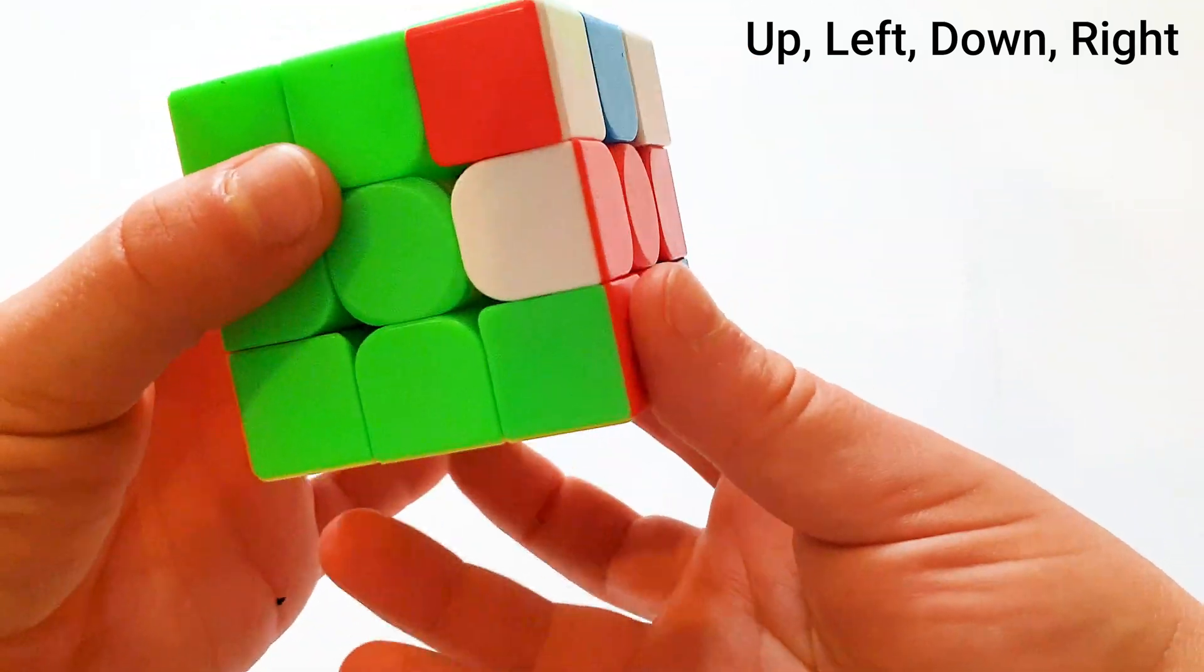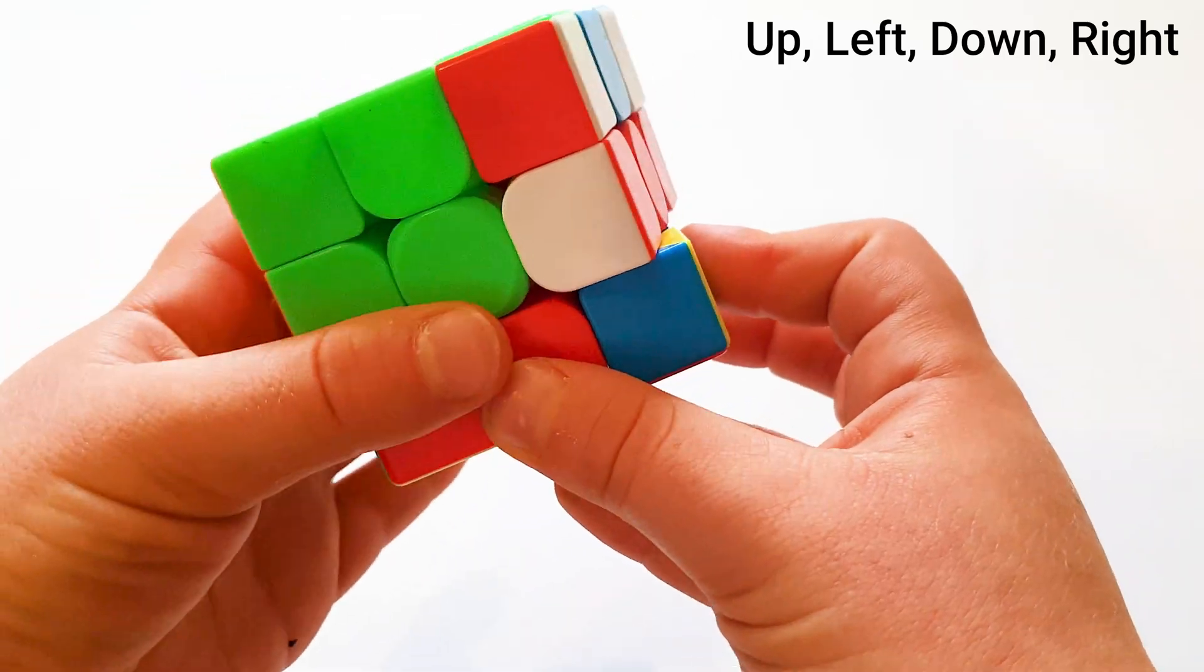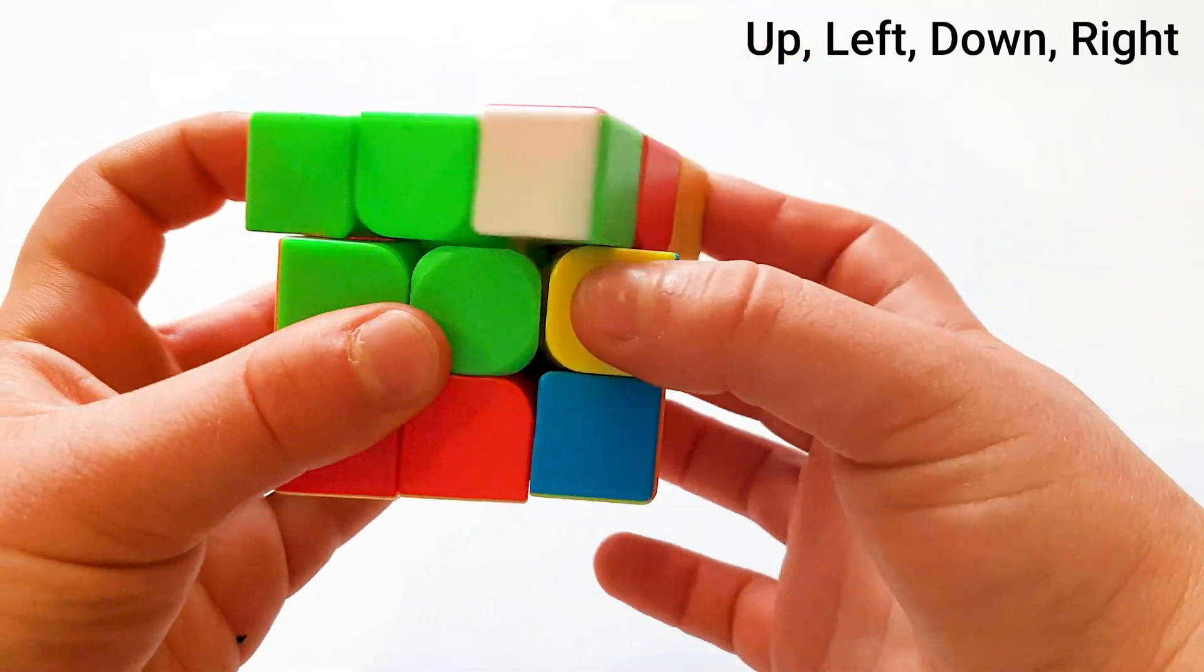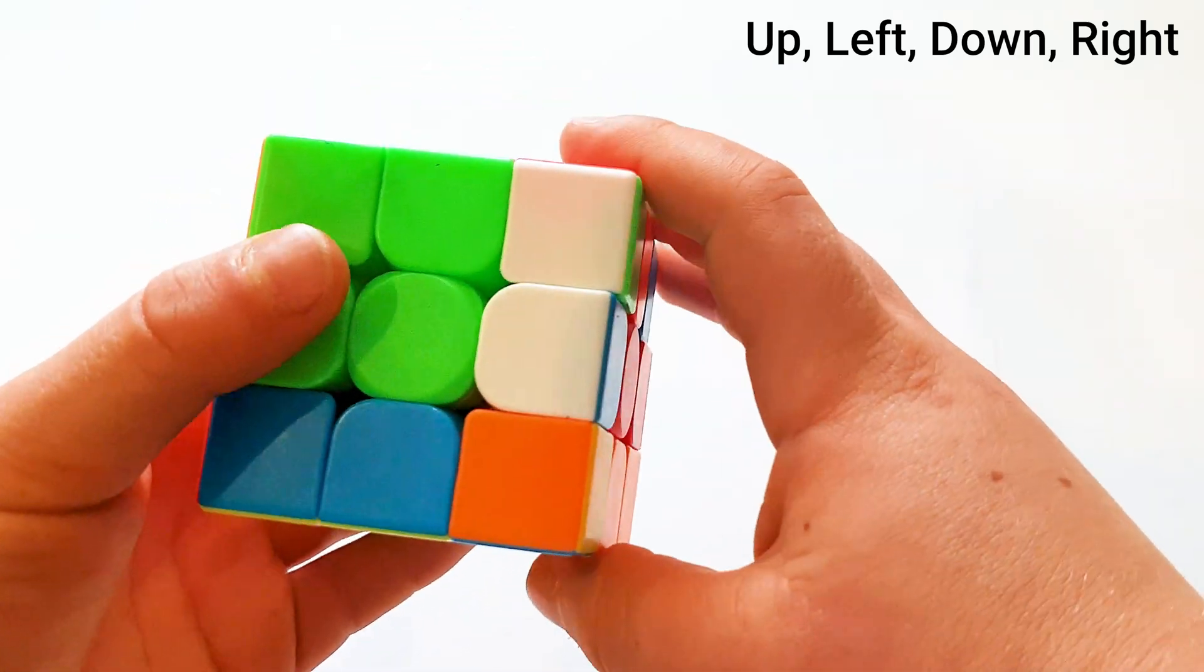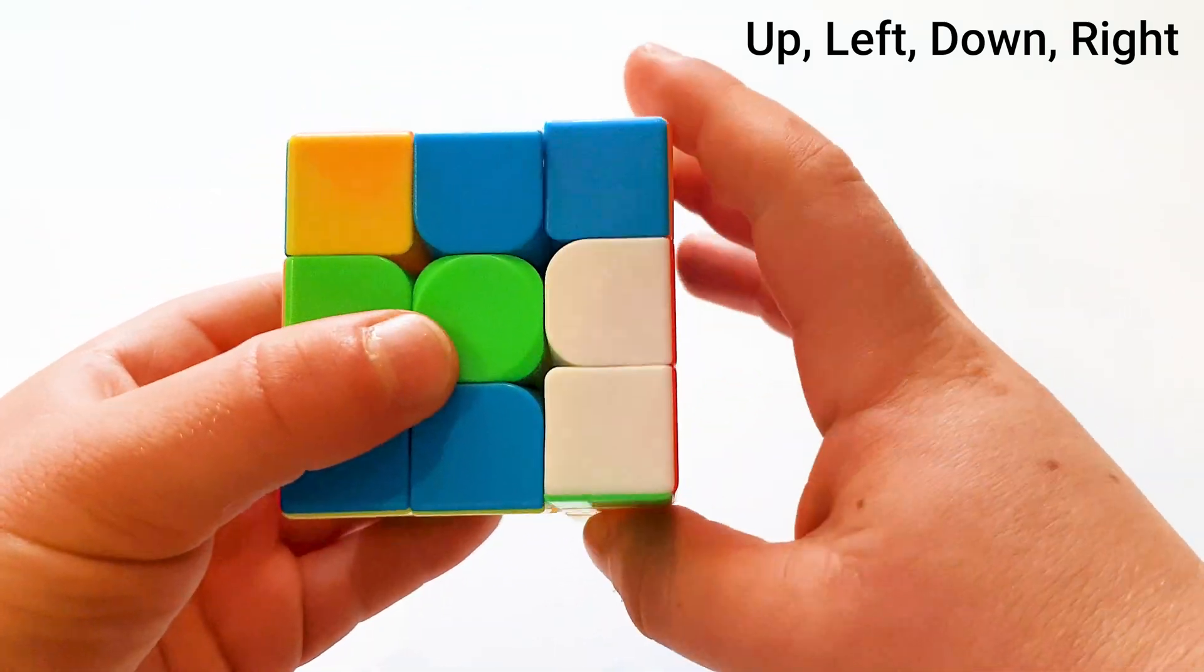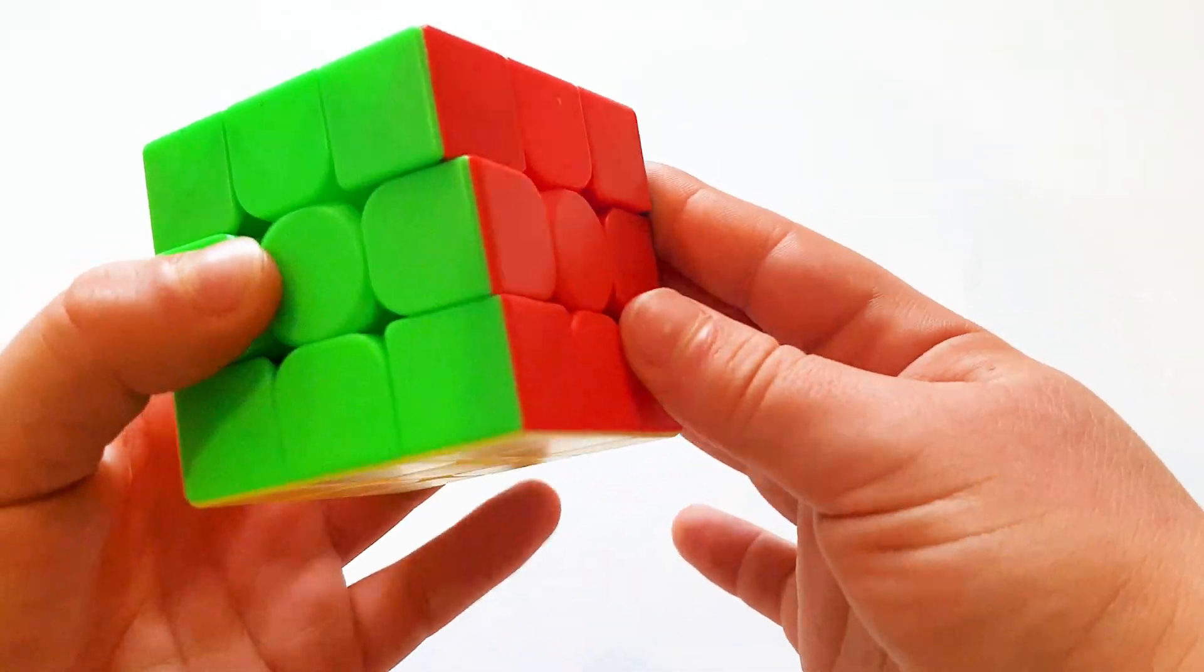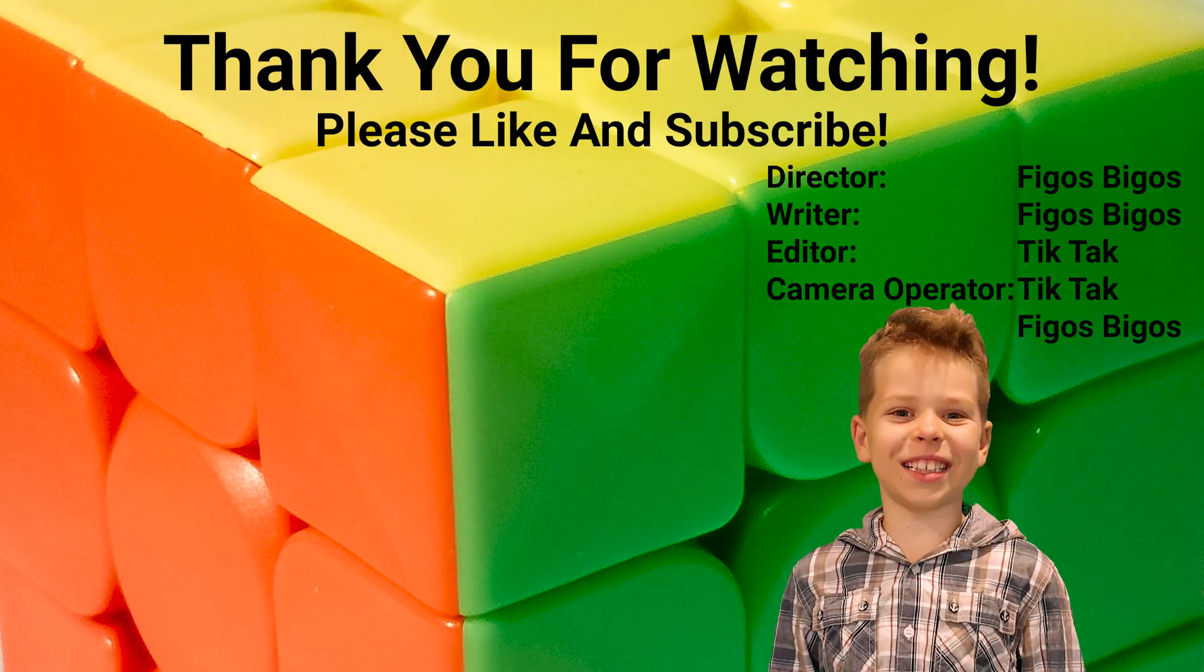And you do it again until they popped in. Then I turn the bottom layer until I have another one and I do the algorithm again. It's important to turn it because if you don't, then you won't solve it. And when you're finished, you'll have it solved.